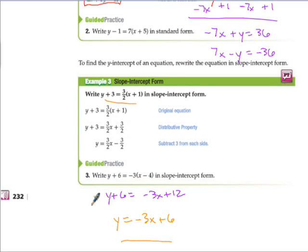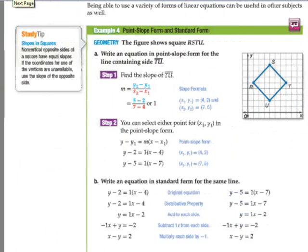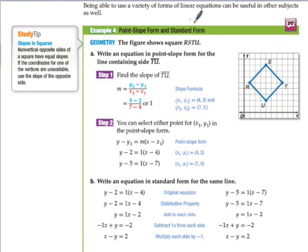Point-slope form is really, really useful for that. Being able to use a variety of forms of linear equations can be useful in other subjects as well. So this is an example of how this kind of problem can help you in geometry: understanding the slope formula and then writing an equation of this line here for TU using the slope and one of those points.